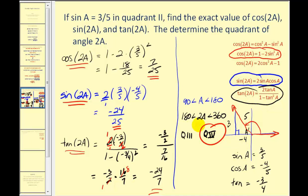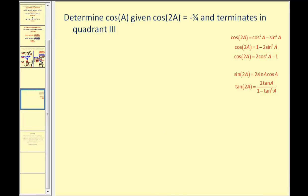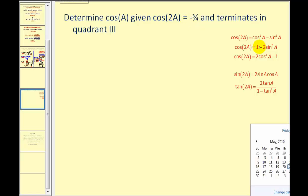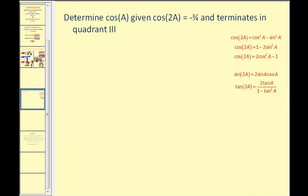Let's look at another problem where we use the identities in reverse. We want to determine cosine of angle A, given that cosine two A equals negative three-fourths and the angle terminates in the third quadrant. Using the identity cosine two A equals two cosine squared A minus one, we can solve for cosine A.